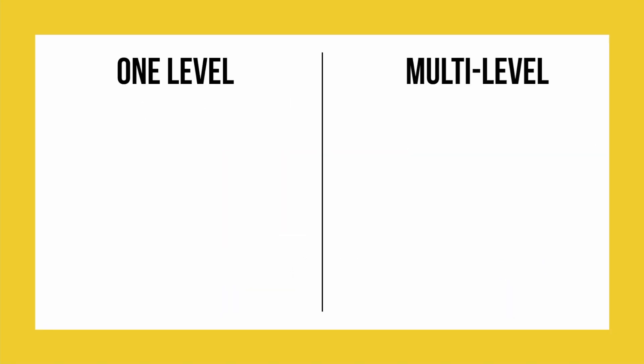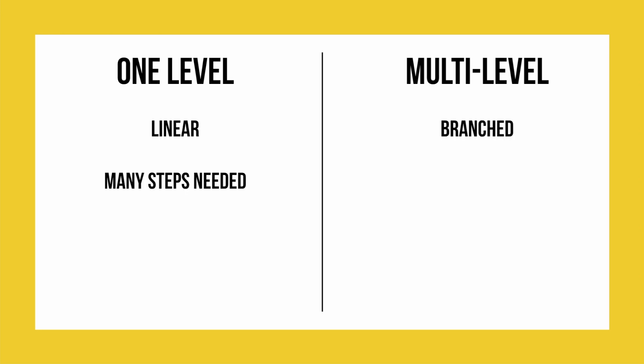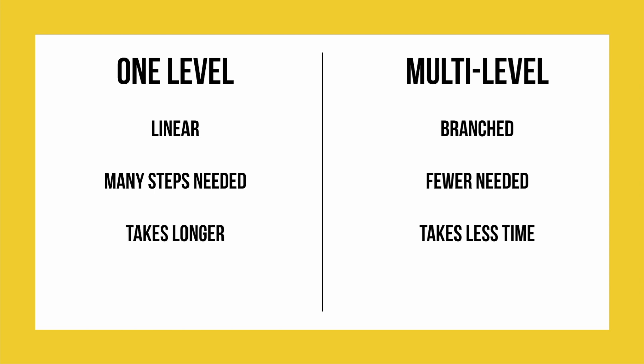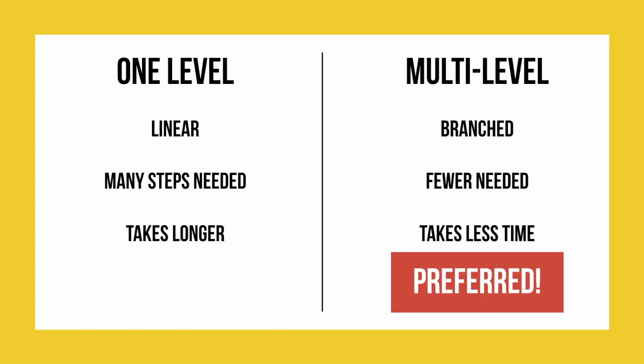Now let's compare the two different methods. The one-level method is linear while the multi-level method is branched. This means that the one-level method has many steps needed while the multi-level has fewer steps. Overall it takes less time to find one object on the multi-level compared to more time on the one-level. All of these different factors come together to make branched or multi-level tree diagrams preferred for coders or other people who sort large chunks of data.